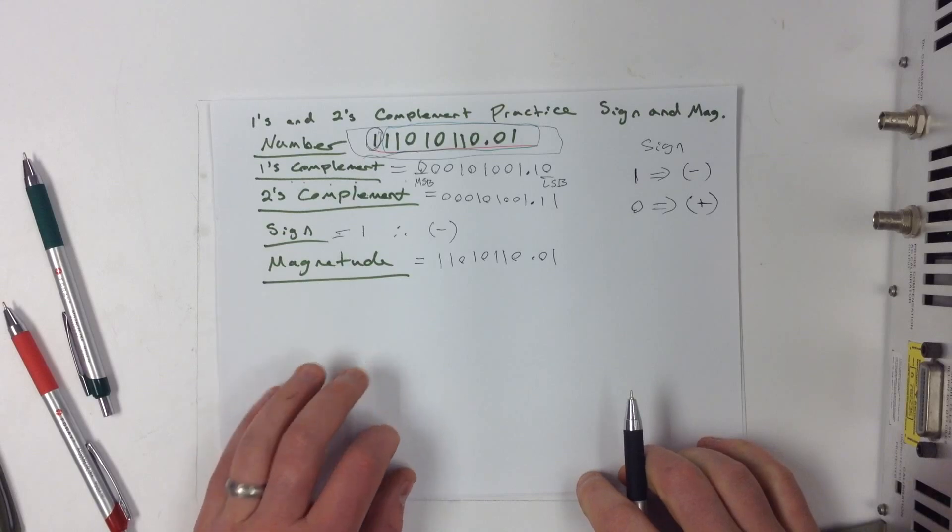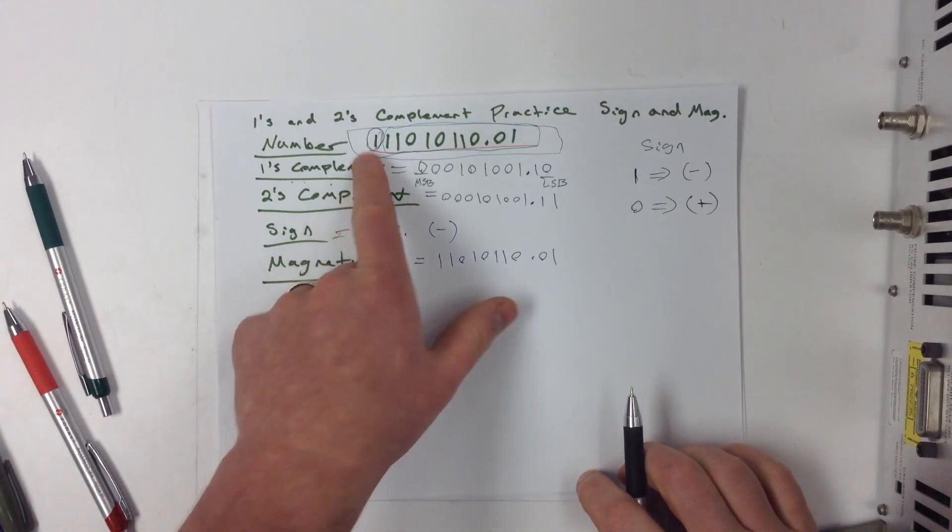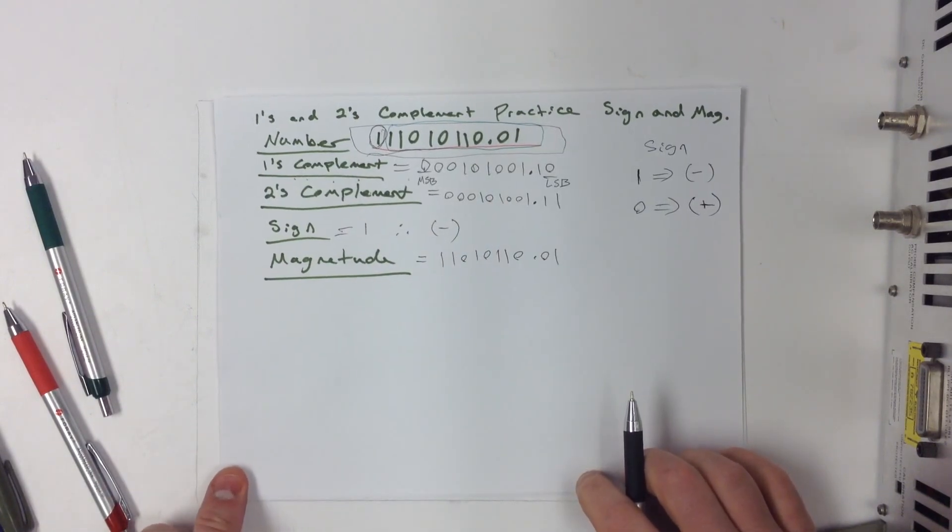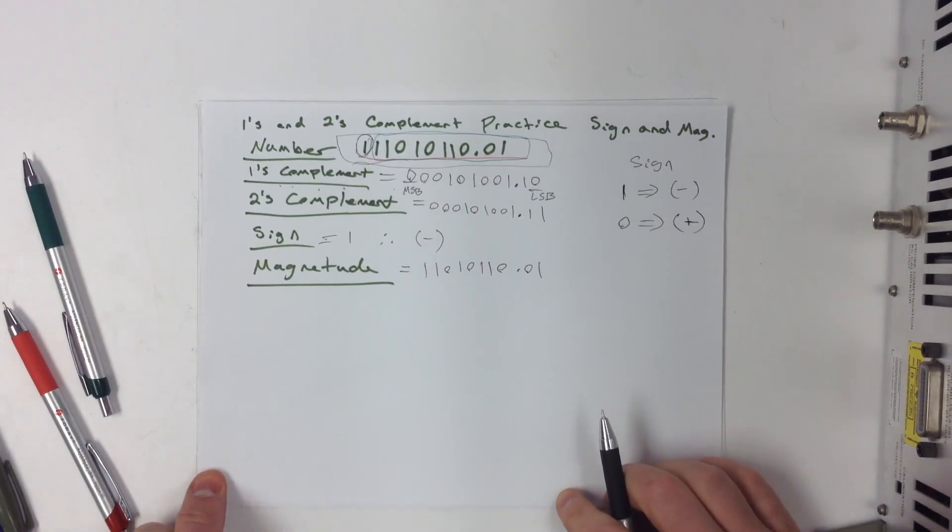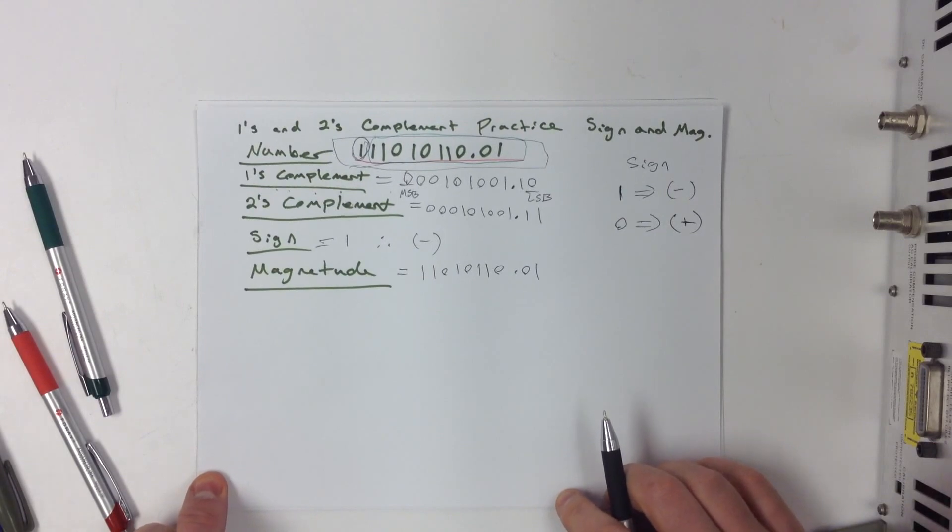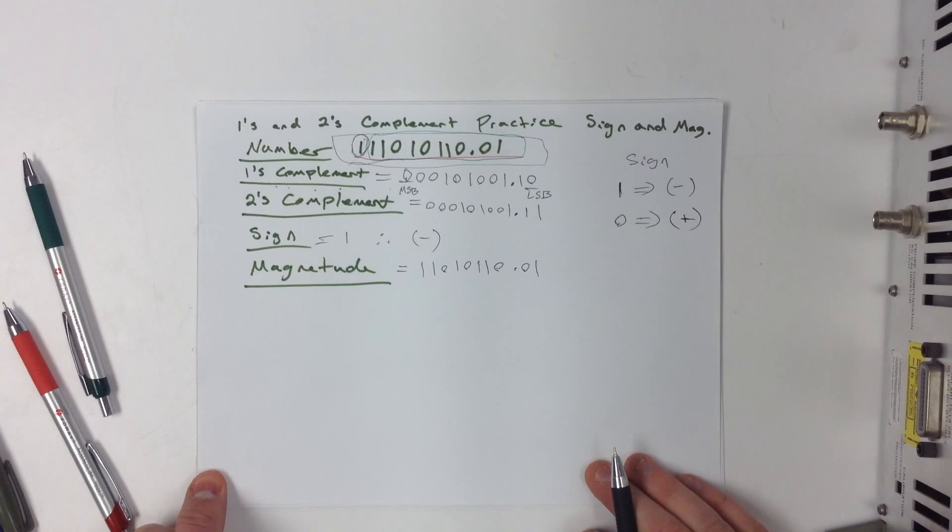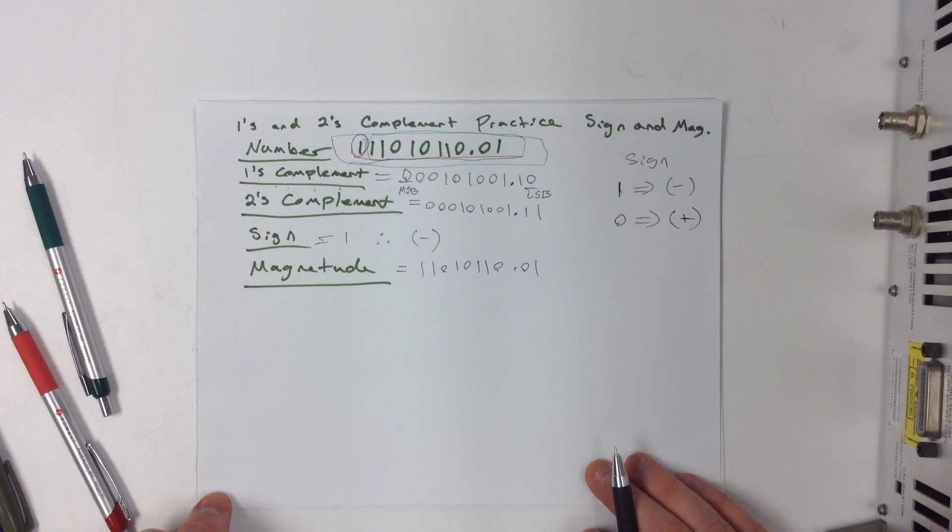That is how to find sign and magnitude, 1's and 2's complement, given any number. And hopefully that will help you guys understand it on your test. My name is Craig Robertson with UNM IEEE. If you have any more questions or if you just need some help with homework, come and see us. We're in the ECE building on UNM campus in room 312. And good luck. Happy studying.